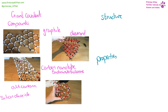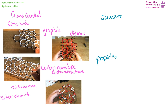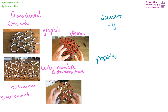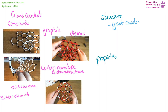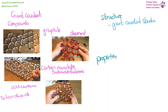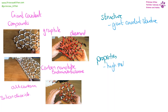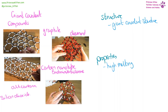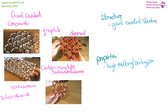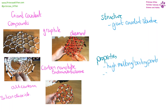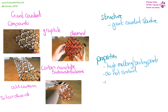For giant covalent compounds — ones made of carbon such as graphite, diamond, fullerenes, or silicon dioxide — they have a giant covalent structure. Their properties are high melting and boiling points, they do not conduct electricity, and they do not dissolve.